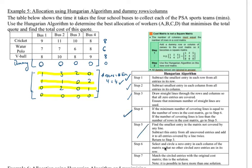Step six is select and circle a zero entry in each column so that no other circled zero entries are in this row. So cricket looks like the only optimum allocation for cricket is going to be here, so it's going to be bus four. We've got water polo. Looks like the best allocation is to bus three. And because bus three is now used up, it can't also go to volleyball.